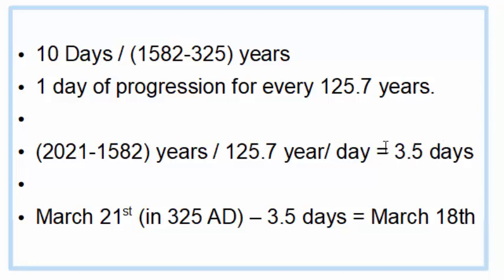Unless the earth and/or the sun changed speeds on us, we should be losing days at the same rate as during Pope Gregory's time. From 1582, we should have lost 3.5 days instead of one day. In other words, the sun should cross the equator on March the 18th, if not March the 17th. So something's not right here.